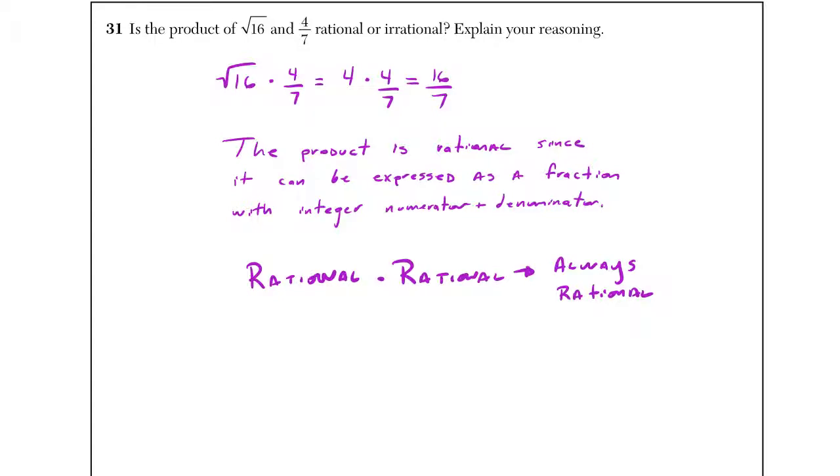First of all, radical 16 is simply 4. 4 times 4 7ths is 16 7ths right away. It's rational, and this should always be our phrasing. It can be expressed as a fraction with integer numerator and denominator values.